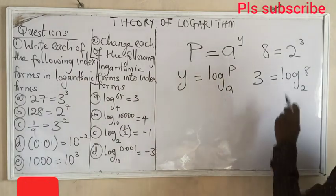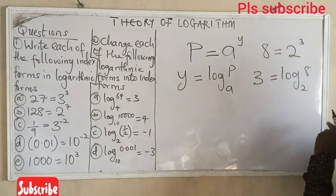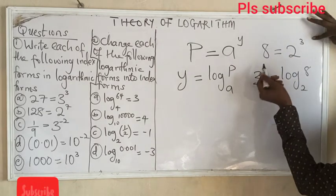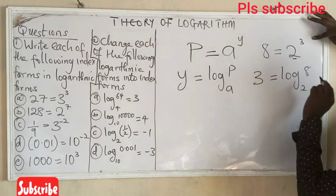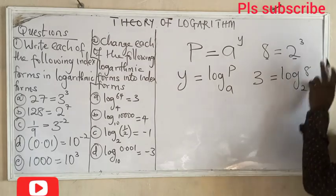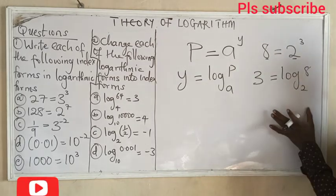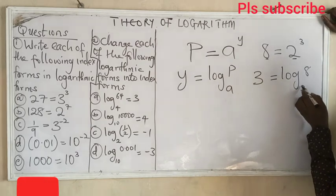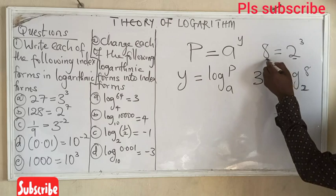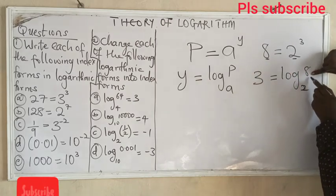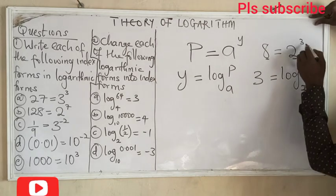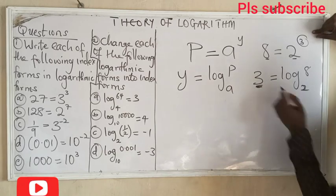As you can see, if 8 equals 2 raised to power 3, this 3 is the power, 2 is the base, and 8 is the result. When switching to log form, this base remains the same — base 2. This 8, which happens to be the result, now becomes the number here: log 8, base 2. And the exponent, which is the power, gives us the result.